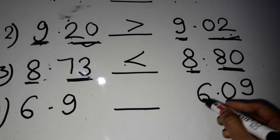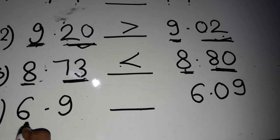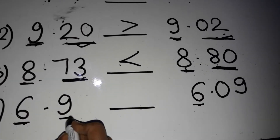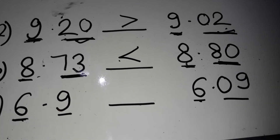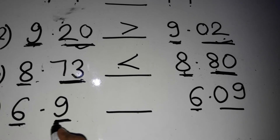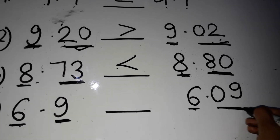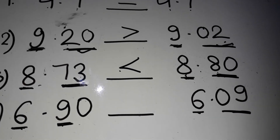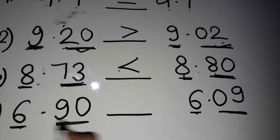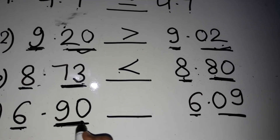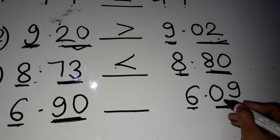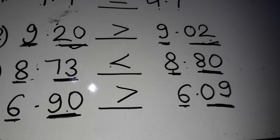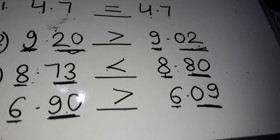Now, 6.9 and 6.09. First, you have to see the left side of the decimal — the whole part. The whole part is the same. Now you will move to the right side of the decimal place. You have to see whether they are like decimals or unlike. Here we have one decimal place and here we have two decimal places, so both are unlike. You have to make them like by putting a 0. Now see the right-hand side of the decimal: this is 90 and here the right side is 09, that means 9. So 90 is big. In this way, we have to compare two decimal numbers.